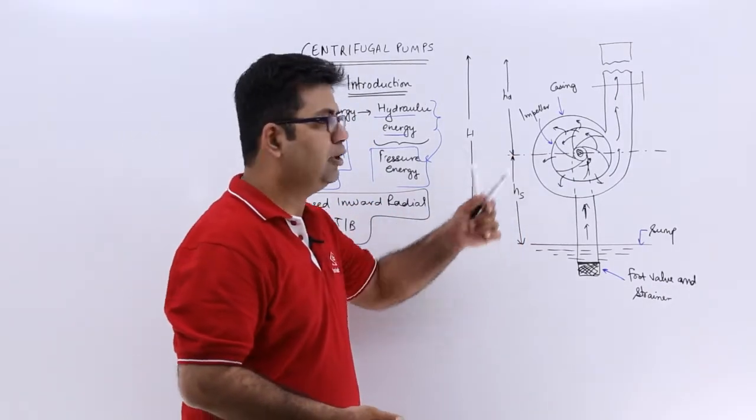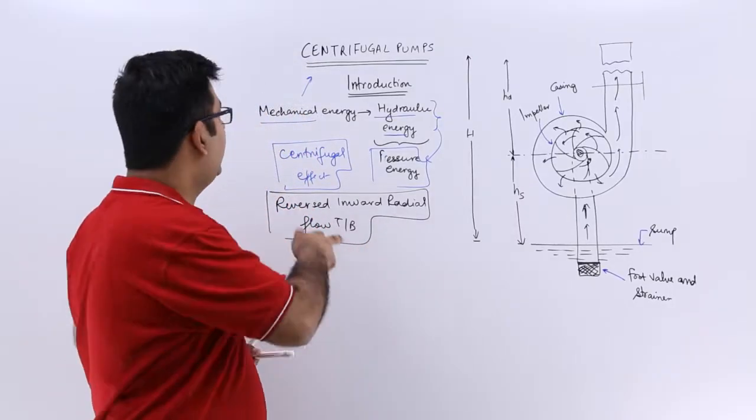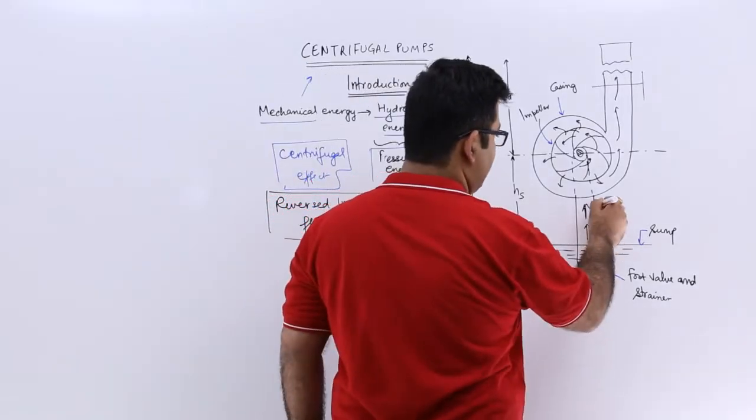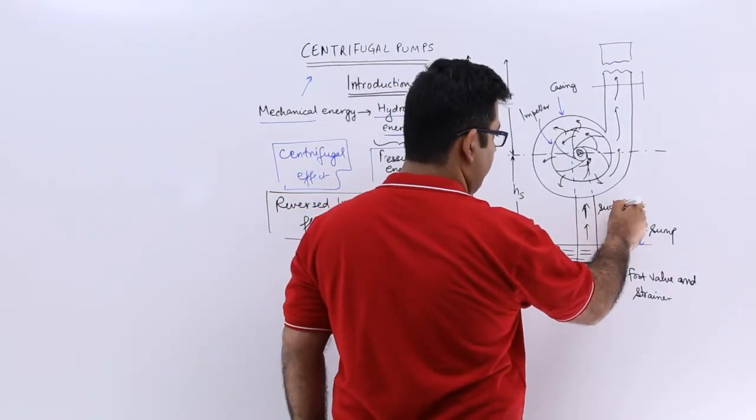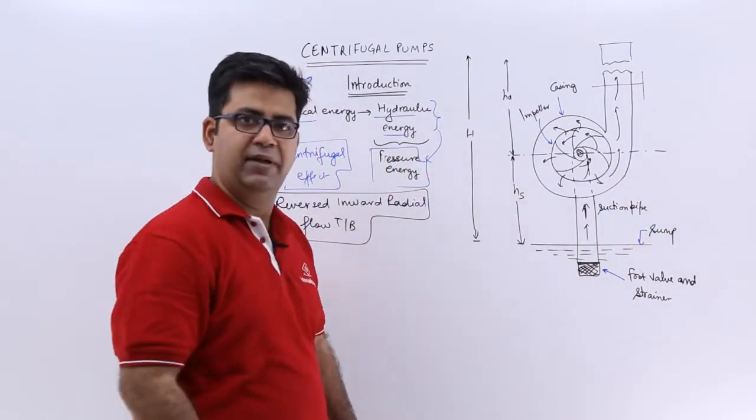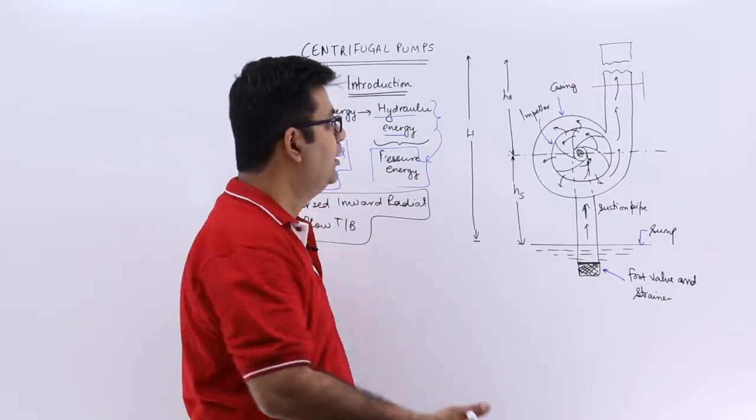So impeller is connected to the prime mover which rotates it, gives it mechanical energy. And then you have a suction pipe, which goes down the sump where the liquid is there, which is to be pumped to a higher head.